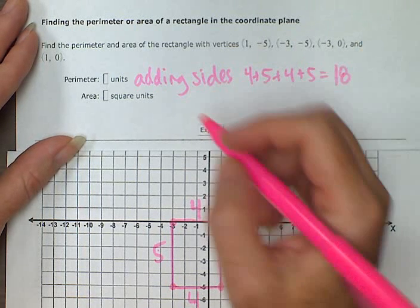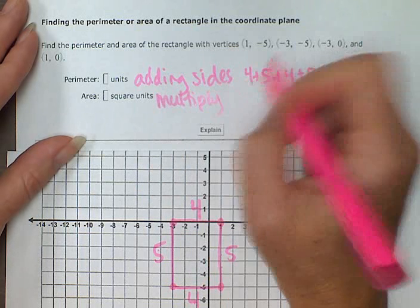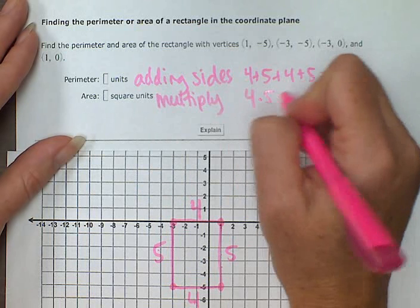Area is 4 times 5. We're multiplying. 4 times 5 gives us an answer of 20.